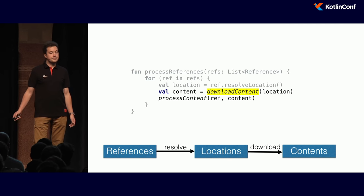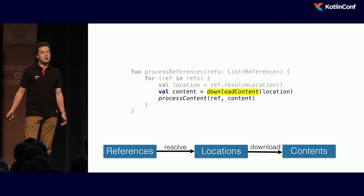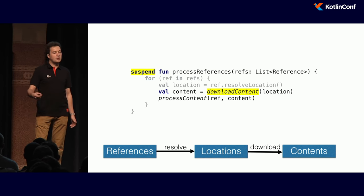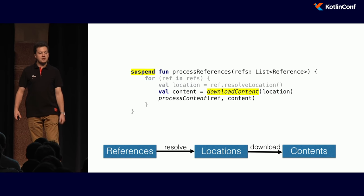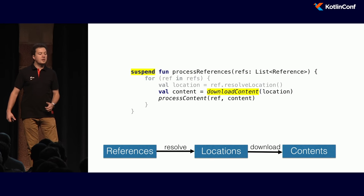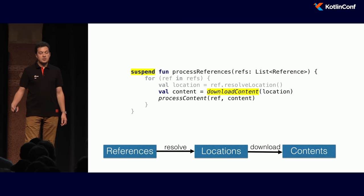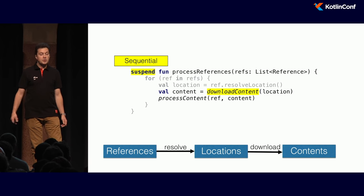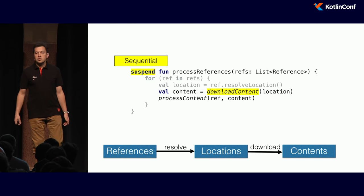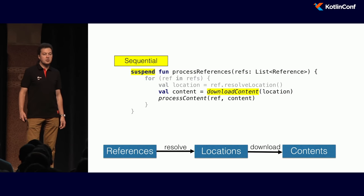That's the thing we want to do. You might already know that if you write code like that, you'll get an error, and the IDE will invite you to add the `suspend` modifier to your `processReferences` function — meaning this function is also long-running and will wait until all the contents are downloaded. But the trick with this code is that it's actually sequential. The code in a suspending function performs sequential thinking — it will download contents one by one, and if that's not fast, it can take quite a lot of time.